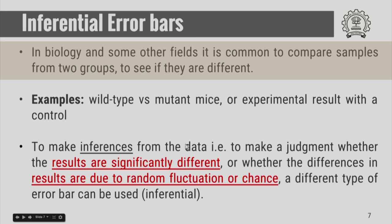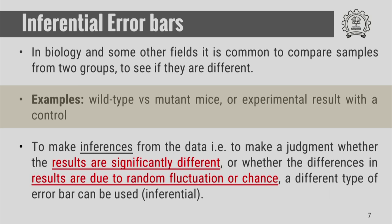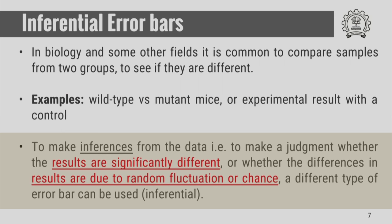Now let us talk about inferential error bars. In biology and in some other fields, it is very common to compare samples from two groups to see if they are different — for example, comparing wild type and mutant mice, or an experimental result with a control. To make inferences from the data or to judge whether results are significantly different or whether differences are due to random fluctuations, a different type of error bar called an inferential error bar can be used.